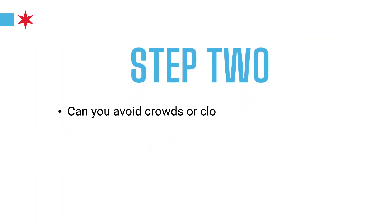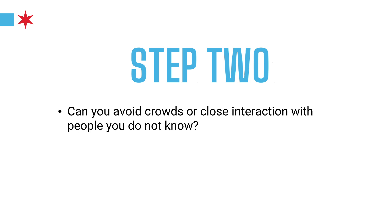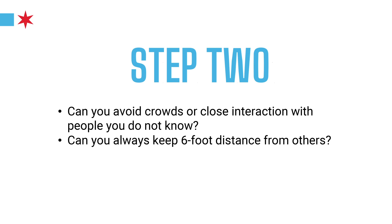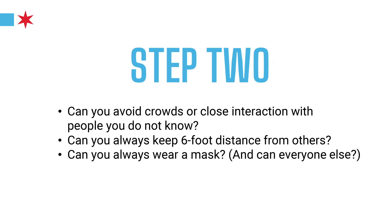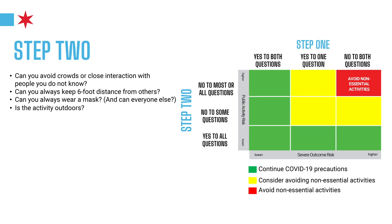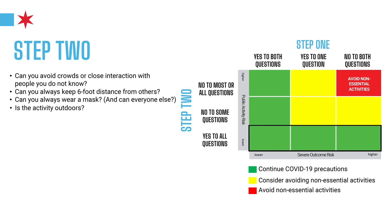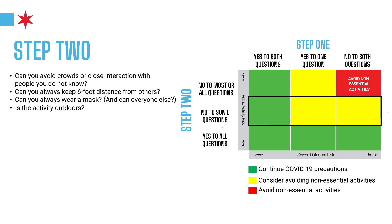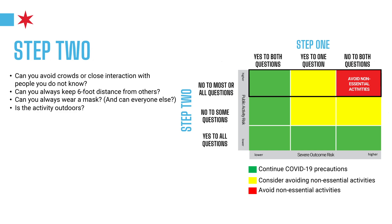Step two: think about the public activity. Can you avoid crowds or close interaction with people you do not know? Can you always keep a six-foot distance from others? Can you always wear a mask, and can everyone else? And is the activity outdoors? If the answer is yes to all of those questions, that's a lower risk public activity. If the answer is no to some of the questions, that's getting into the moderate risk for public activity. And if the answer is no to most or all of those questions, that's a higher risk public activity.